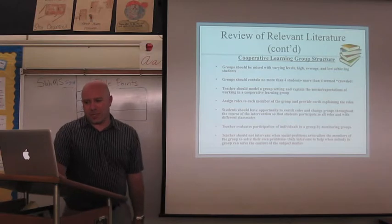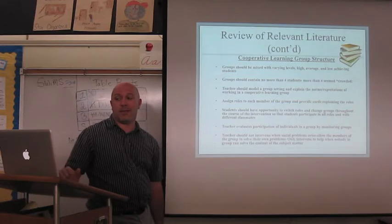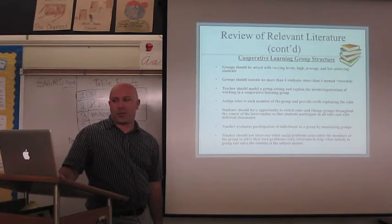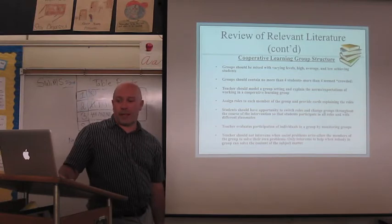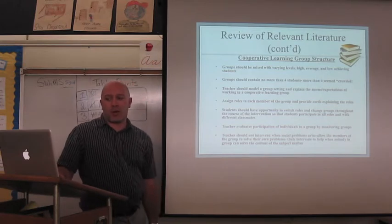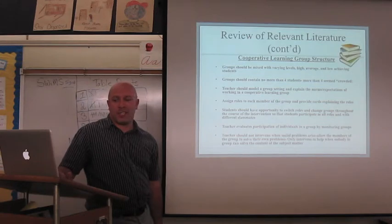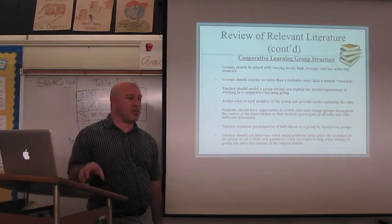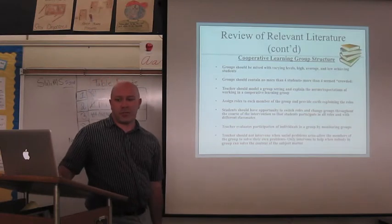The structure of groups, the research shows that it should be mixed with varying levels, so that you should have high, average, and low achieving students within the same group. There should be no more than four students to a group, as more than four seem to be crowded. Prior to implementing the intervention, the teacher should model what a group setting should look like, explain the norms and expectations of working in a cooperative learning group, and then assign roles to each member of the group so that they each have a different job, and the students have that actual card with the role explanations on them, so they know what they're supposed to do for that particular day.